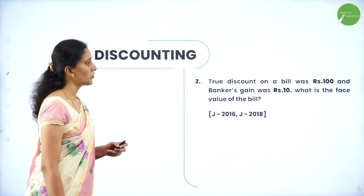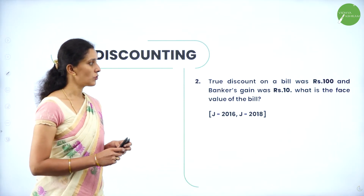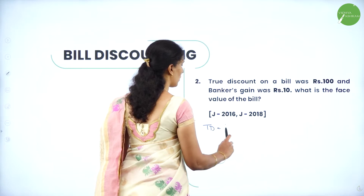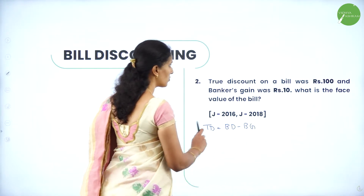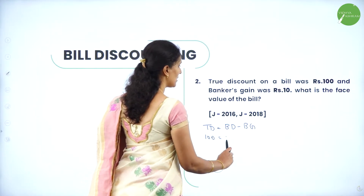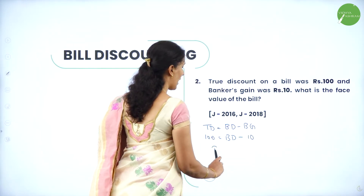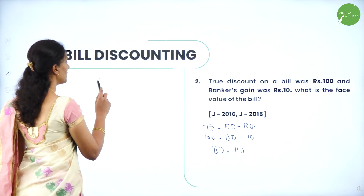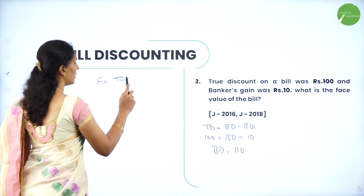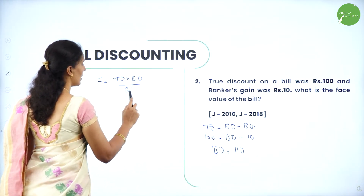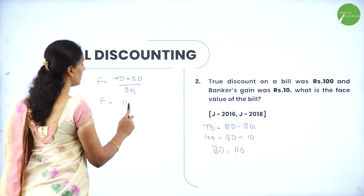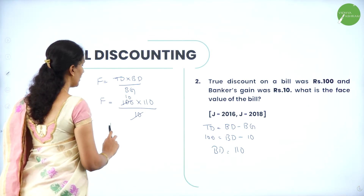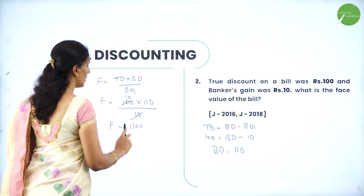Next question. True discount on a bill was Rs. 100 and banker's gain was Rs. 10. What is the face value of the bill? We know the formula: true discount equals banker's discount minus banker's gain. True discount is 100 and banker's gain is 10, so banker's discount becomes 110. Face value F equals true discount into banker's discount divided by banker's gain: 100 into 110 divided by 10. The face value of the bill becomes Rs. 1100.